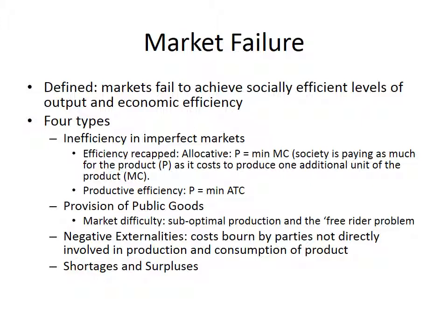We'll recap the idea of economic efficiency. First, we have allocative efficiency, which is where price equals the minimum marginal cost. What this ultimately means is that society is paying as much — the price — as it costs society to produce the product, so there's no excess. Then we have productive efficiency, which is price equals minimum average total cost, meaning the producer is producing at the least cost. Most of our focus is going to be on allocative efficiency in terms of socially optimal levels of output.